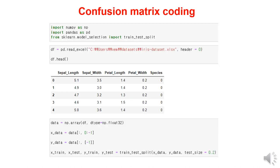Now, let's implement the code to create a model using the support vector machine algorithm for classifying iris data, and calculate the confusion matrix to obtain the F1 score. The Jupyter notebook file is available on GitHub for you to download and run. First, import the necessary libraries such as NumPy, Pandas, and TrainTestSplit. Then, load the dataset from an Excel file. Next, assign X and Y variables to the features and labels respectively. Split the data into training and testing datasets with an 80-20 ratio.